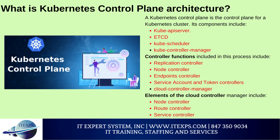Cloud controller manager: if the cluster is partly or entirely cloud-based, the cloud controller manager links the cluster to the cloud provider's API. Only those controls specific to the cloud provider will run, and the cloud controller manager does not exist on clusters that are entirely on-premises. More than one cloud controller manager can run in a cluster for fault tolerance. Its elements include: the node controller, which determines the status of a cloud-based node that has stopped responding; the route controller, which establishes routes in the cloud provider infrastructure; and the service controller, which manages the cloud provider's load balancers.